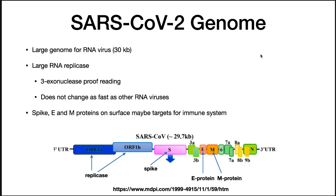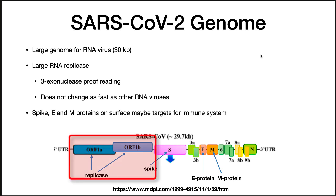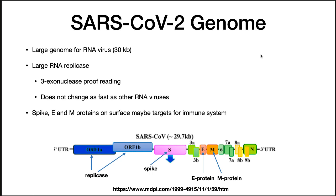The SARS-CoV-2 genome is 30,000 base pairs long, and it is an RNA virus — this is very large for an RNA virus. The first two genes, ORF1A and ORF1B, encode the polyproteins, which make parts of the replicase. The large RNA replicase is unusual in that it encodes a 3-prime exonuclease, which is a proofreading activity, so when it copies its genome, it is actually able to go back and fix mistakes. This is probably necessary because of the large genome — if it didn't have that proofreading capability, you'd never make a successful copy of the virus.